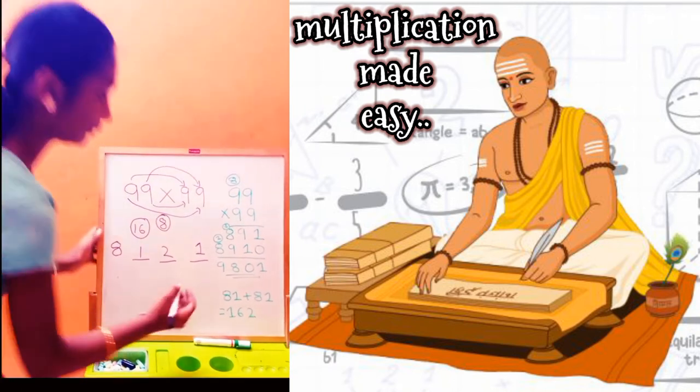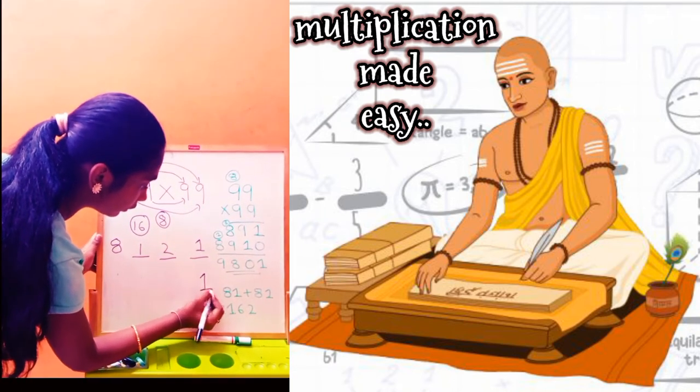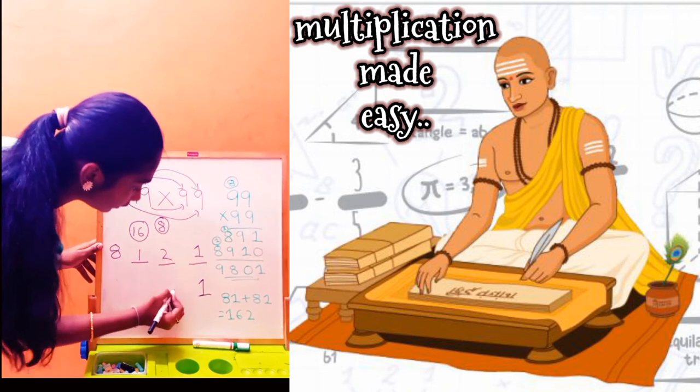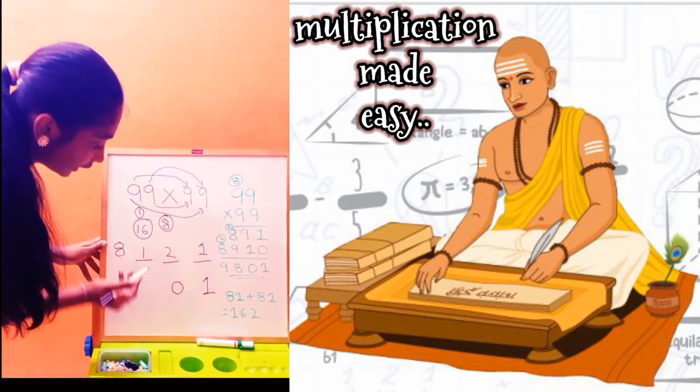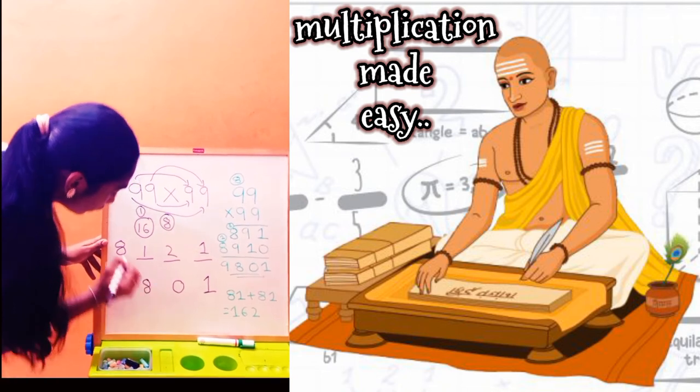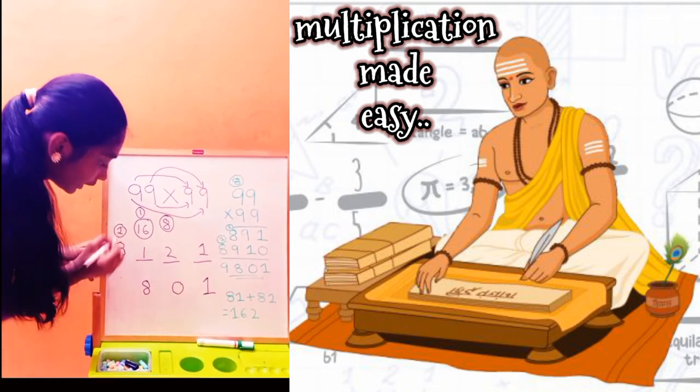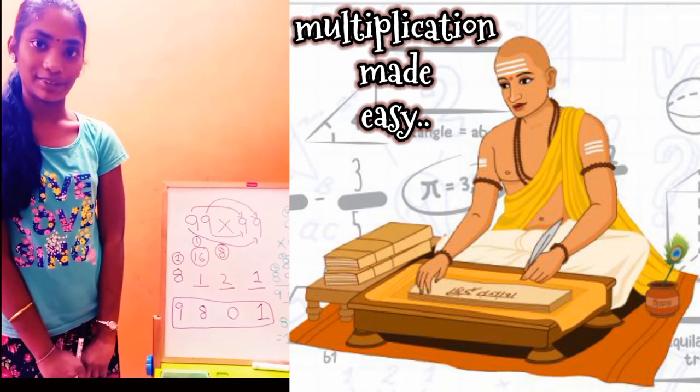Now let's add it. 1. 8 plus 2, 10. 0. 1 carry. 17, 18. 8. 1 carry. 8 plus 1, 9. 9, 801.